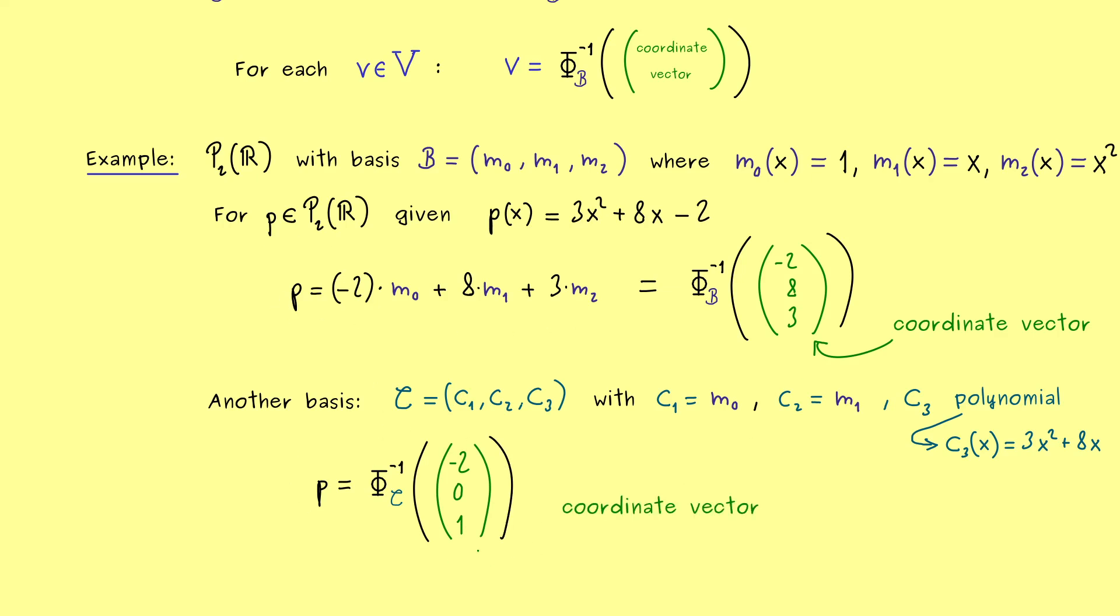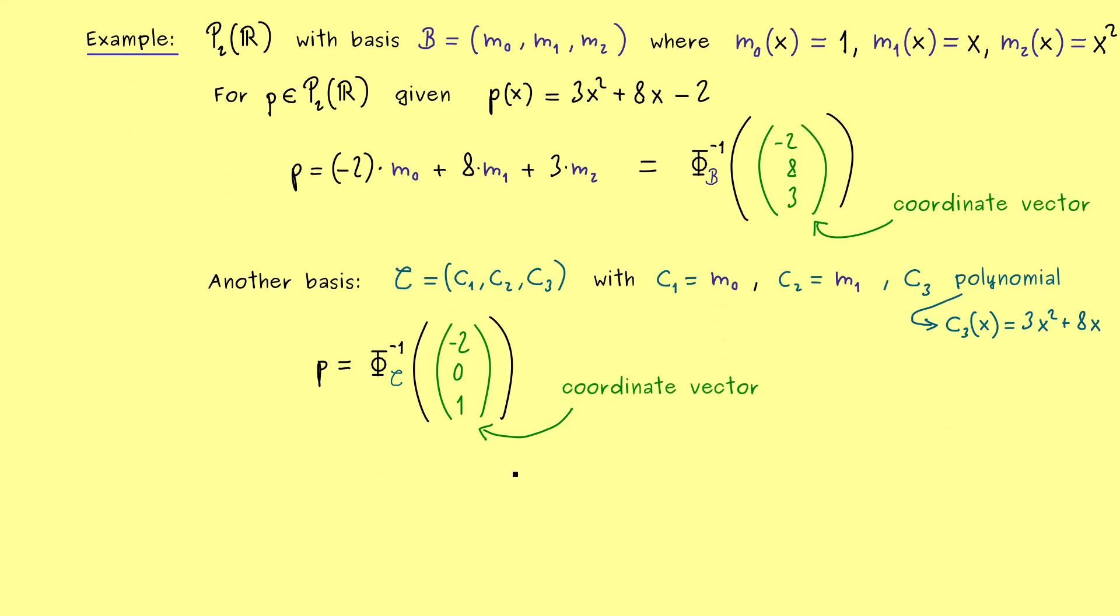So you could say it looks a little bit simpler than before but also the basis looks more complicated now. And with that you already see we could have completely different coordinate vectors representing the same p. And the change between these two is what we call the change of basis.